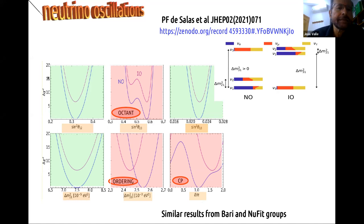We have a very good measurement of the parameters indicated in green — that is the solar mixing, the reactor mixing, and the solar splitting. However, we do not have a very good measurement of the atmospheric angle. Here we have the octant problem. We have solutions at the higher octant and the lower octant. Moreover, we have two possibilities associated to normal or inverted order neutrino spectrum, corresponding to the ambiguity we still have in determining the ordering.